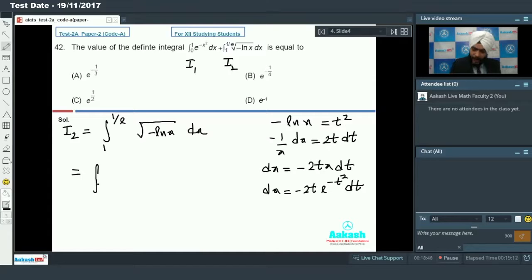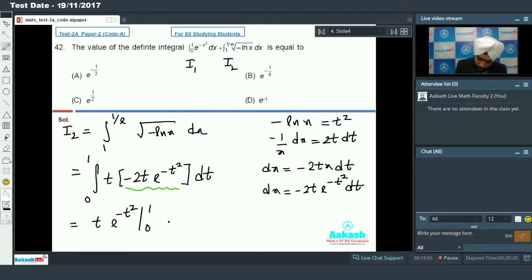dx will be minus 2t e raised to power minus t square dt. Since minus ln x equals t square, when x is 1 by e, t will be 1. This becomes a perfect integral. If I take minus t square as p, then minus 2t dt will be dp. So it will be e to the power p only, which is e to the power minus t square from 0 to 1, minus the integration that gives i2 equals 1 by e minus i1. Since i1 plus i2 is what I require, obviously 1 by e will be my answer. That means option number D is the correct choice.